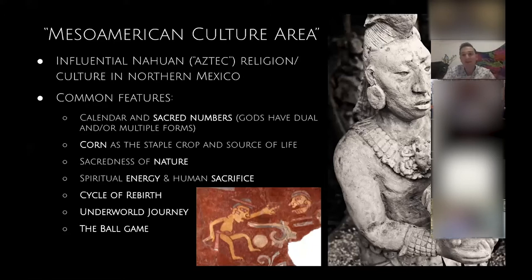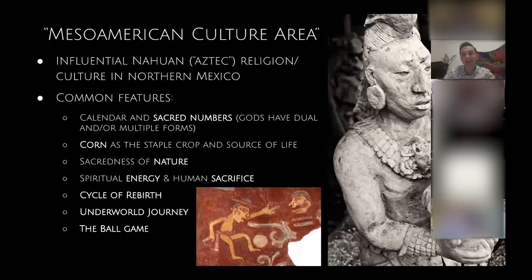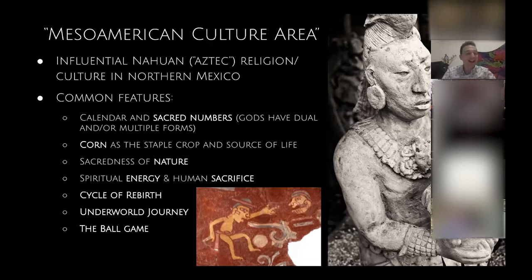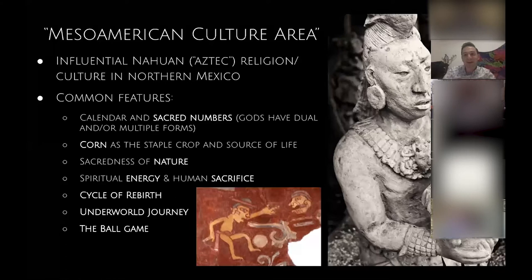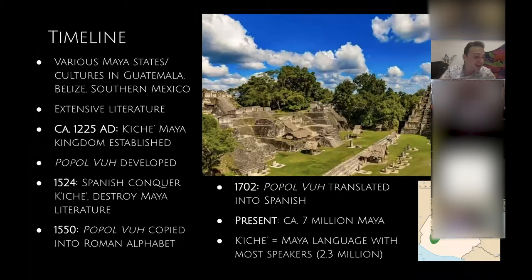Mesoamericans have very unique beliefs about the energy that imbues living things. They believe the human body has different seats of different types of energy, and all this energy goes through a cycle — a process of renewal and rebirth. That's the journey of the underworld. The Popol Vuh is all about heroes journeying to the underworld, and all of that is represented in the ball game, which is really the heart of the story. When you boil it down to its bare bones, it's a story about playing sports — heroes challenged to play a rubber ball sport against evil demons — but there's so much rich symbolism behind that narrative.